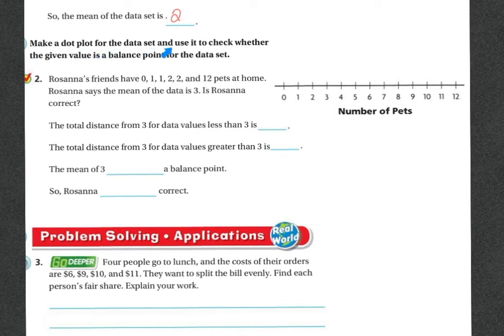Make a dot plot for the data set and use it to check whether the given value is a balance point for the data set. Rosanna's friends have 0, 1, 1, 2, 2, and 12 pets at home. Rosanna says that the mean of the data is 3. Is Rosanna correct? So first let's plot it.